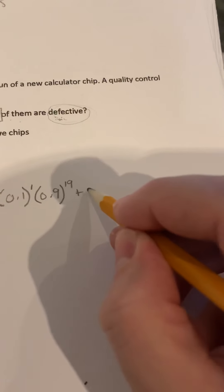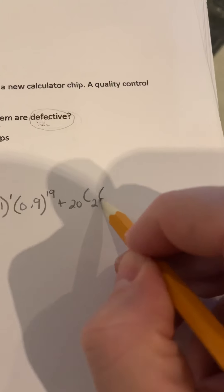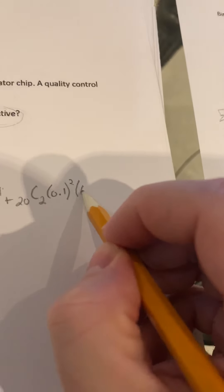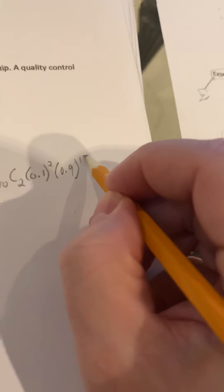And lastly, 20 choose 2. So 0.1 to power of 2. And 0.9 to power of 18.